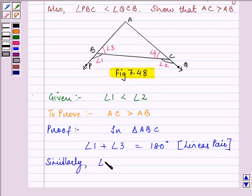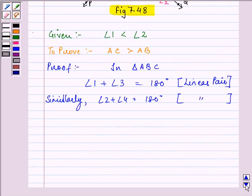Similarly, angle 2 plus angle 4 is equal to 180 degrees because of the same reason. So we can say that therefore angle 1 plus angle 3 is equal to angle 2 plus angle 4 since both of these sums are equal to 180 degrees.